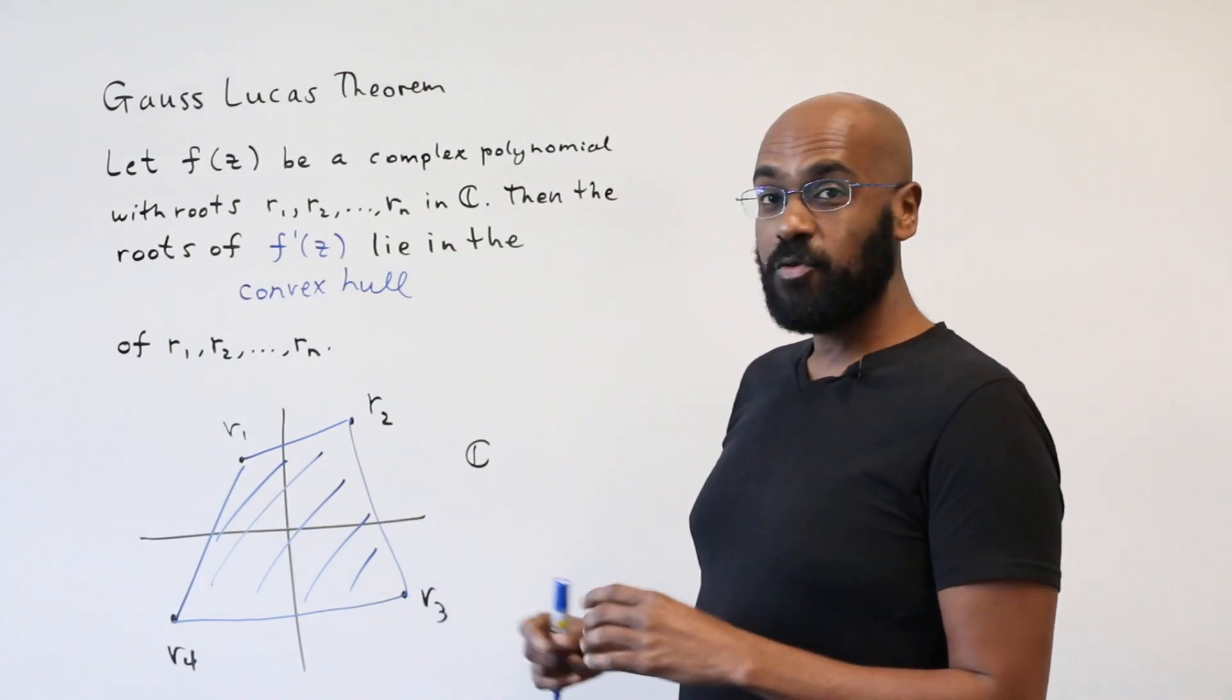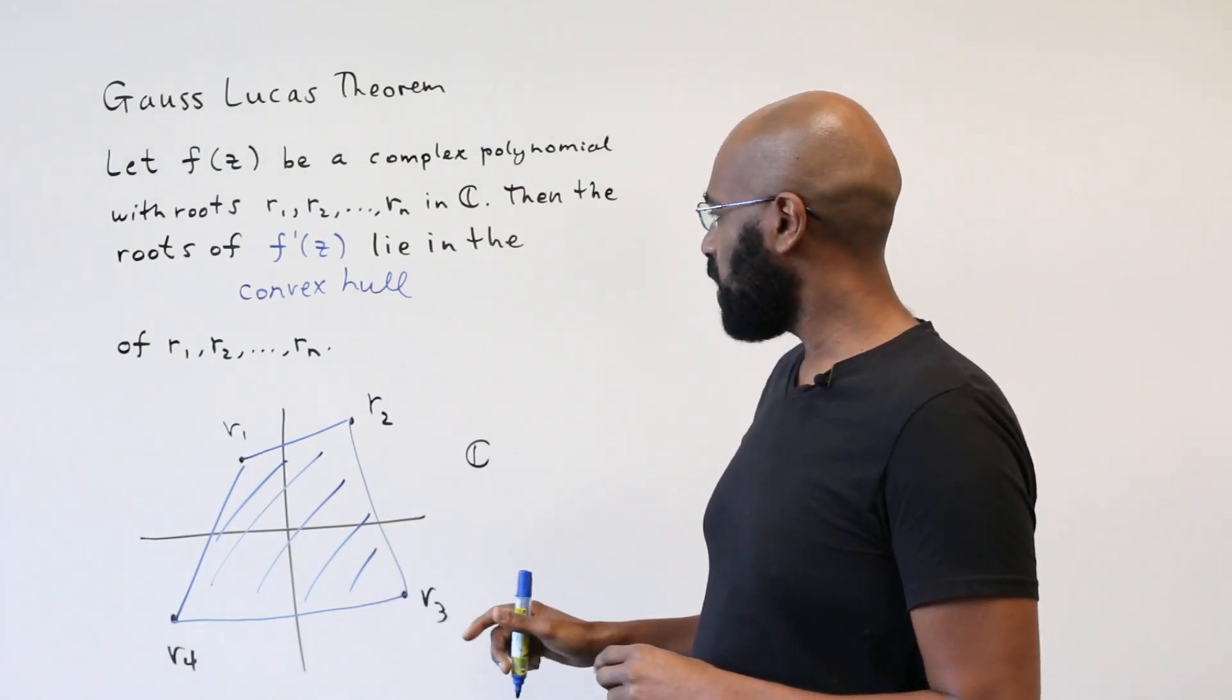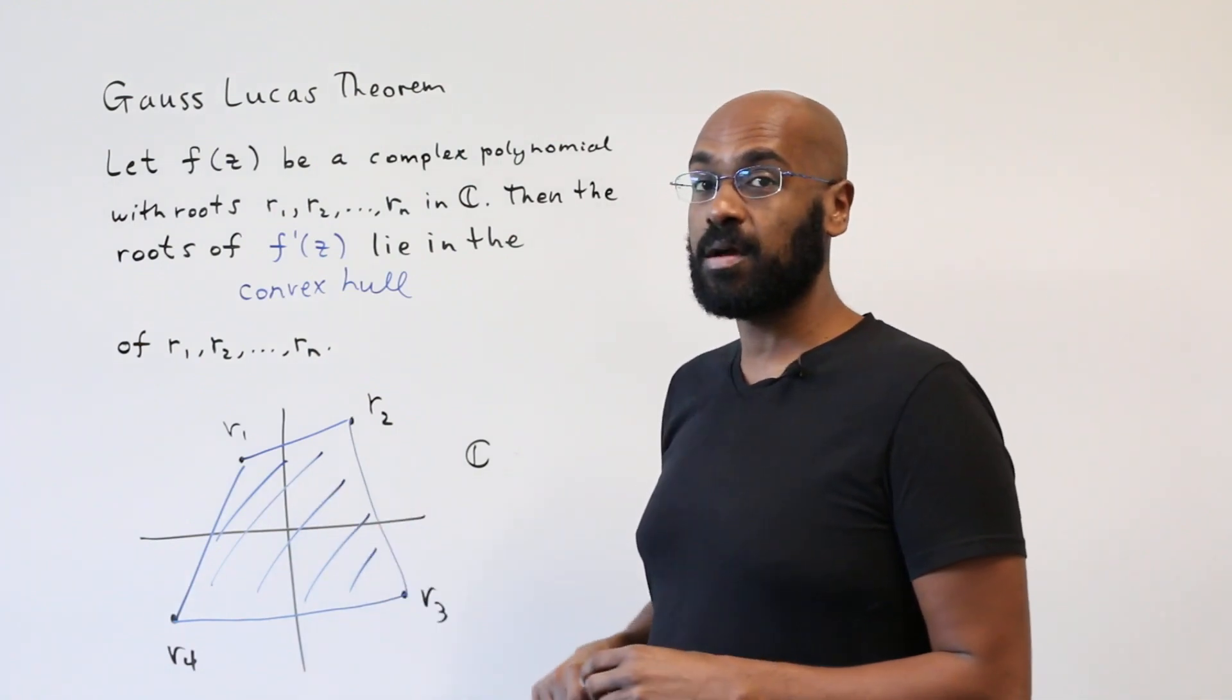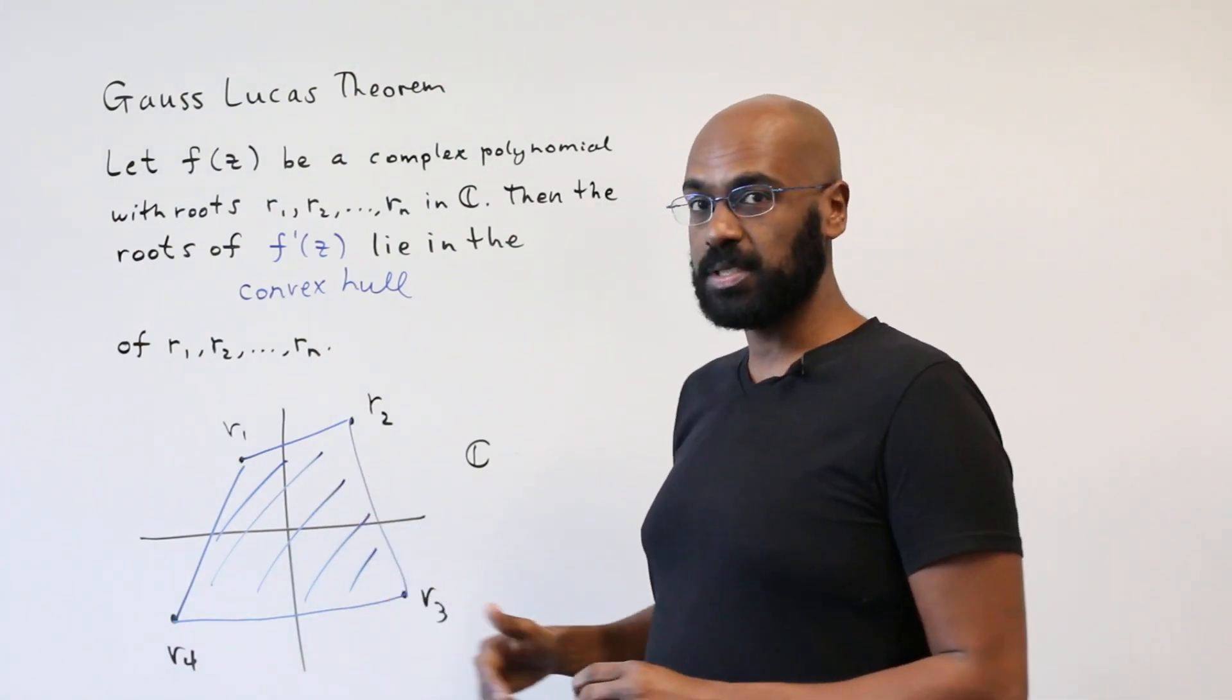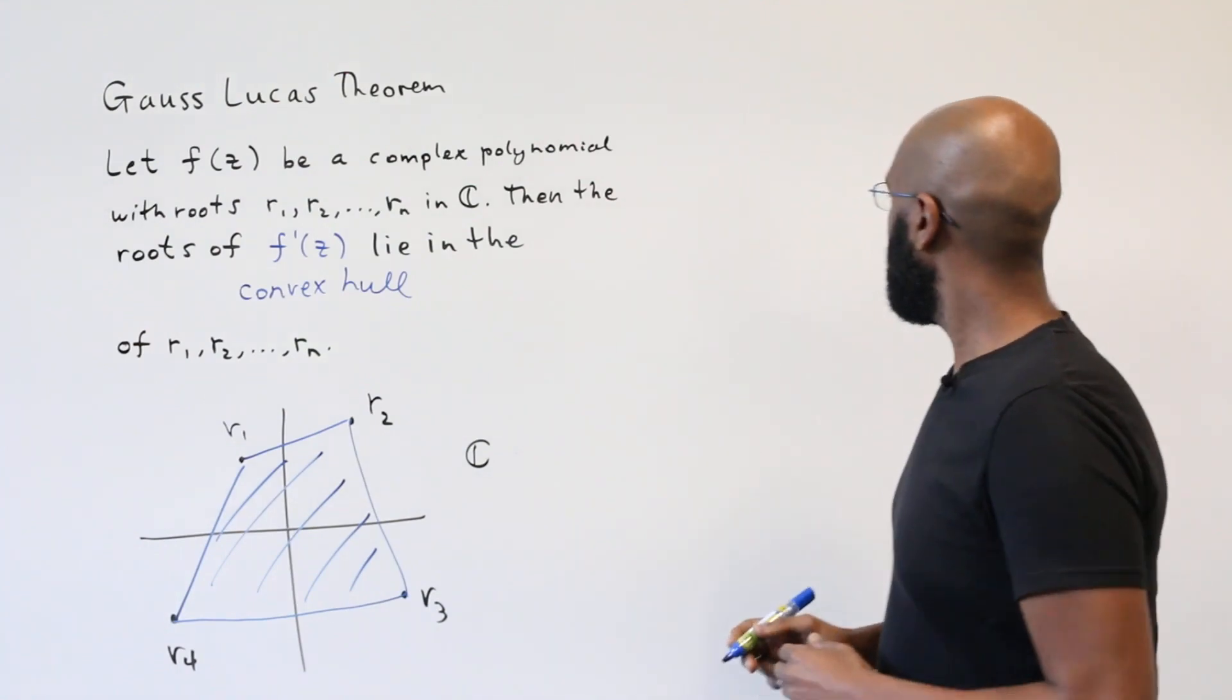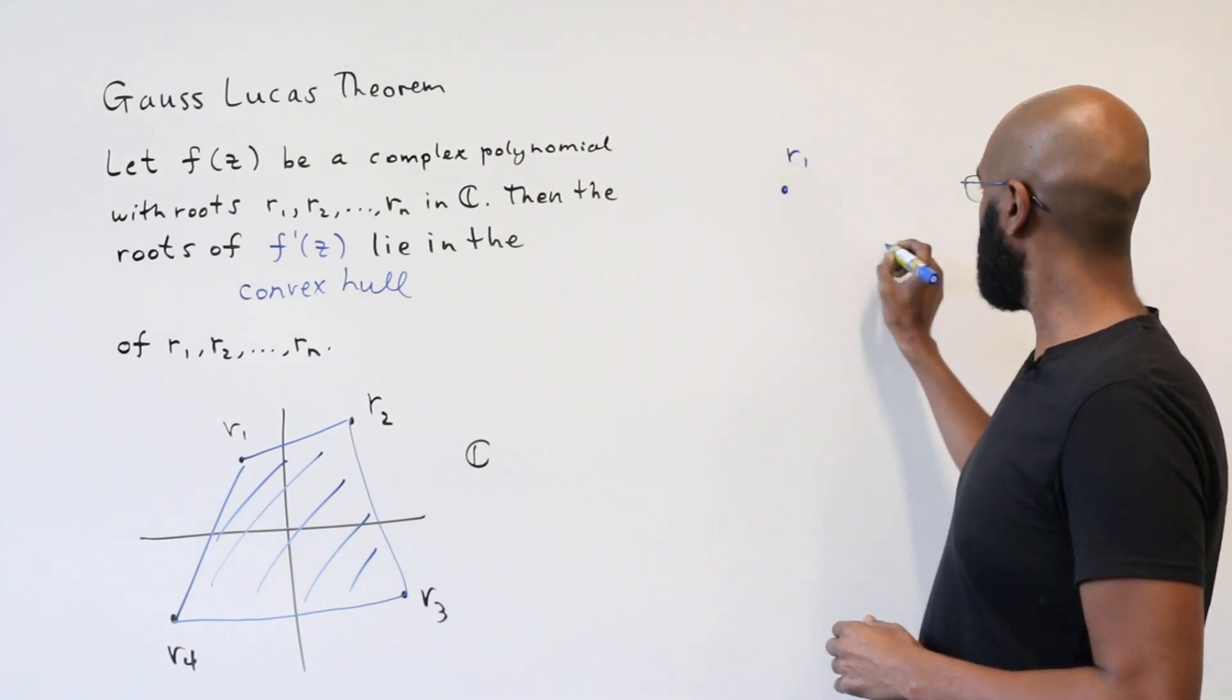Before seeing the really insightful proof of this theorem, we should talk about how to even algebraically express points in the convex hull of a set of points in general because it's going to be needed for the proof. Let's draw a picture here. Imagine we have two points exactly, r1 and r2.